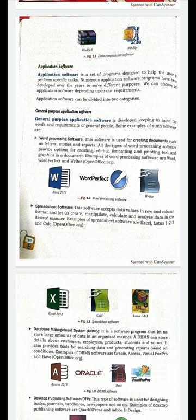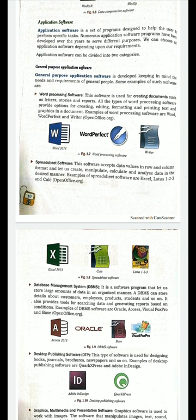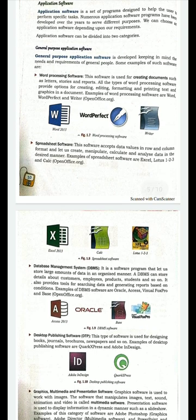Application software is designed to help the user perform a specific task. It is a software designed for a particular job. There are two types of application software: general purpose application software and specific purpose application software. General purpose application software is developed keeping in mind the needs and requirements of general people.